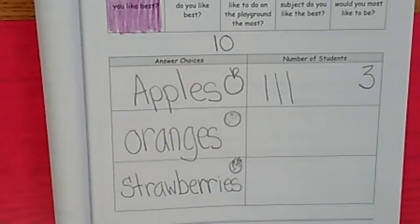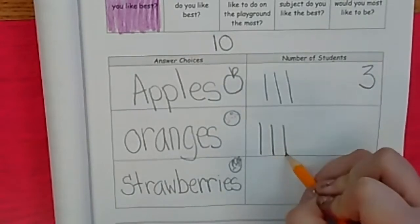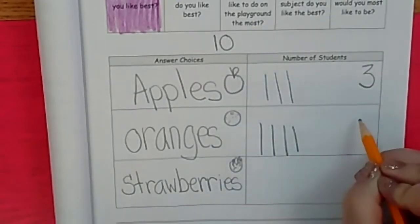Oranges also had, well, almost real close to three. It had four votes. Let's label it four. One, two, three, four. And put that four there.